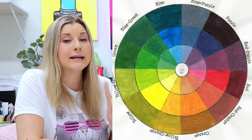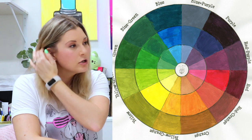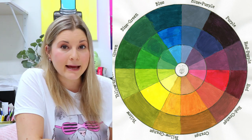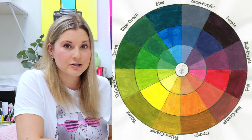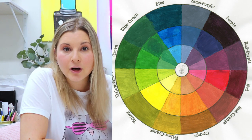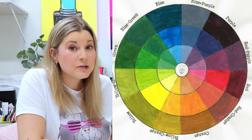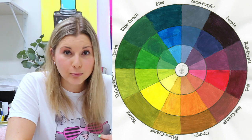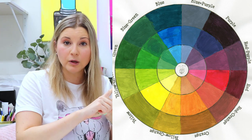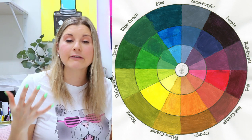However, we can mix our primary colors to make our secondary colors. So for instance, we could mix red and yellow to make orange. We can mix yellow and blue to make green. And we can mix our blue and red to make our purple. So purple, orange, and green are secondary colors.